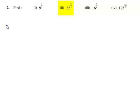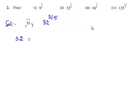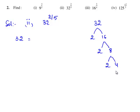Now let us move on to the second bit of the question: find 32 raised to the power of 2 by 5. First let us write 32 in its irreducible factors. 32 can be written as 2 times 16, 16 is 2 times 8, 8 is 2 times 4, and 4 is 2 times 2. So 32 equals 2 to the power of 5.